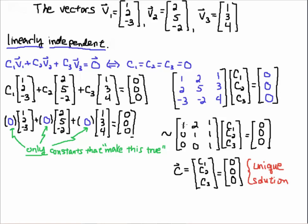And I now find, if I look at the pivots — 1, 1, 1 here — that means that the only solution, the unique solution to this system, is that C1 is equal to zero, C2 is equal to zero, and C3 is equal to zero. So the only constants that make this linear combination equal to the zero vector — the only constants that can make this true — are zero, zero, zero.